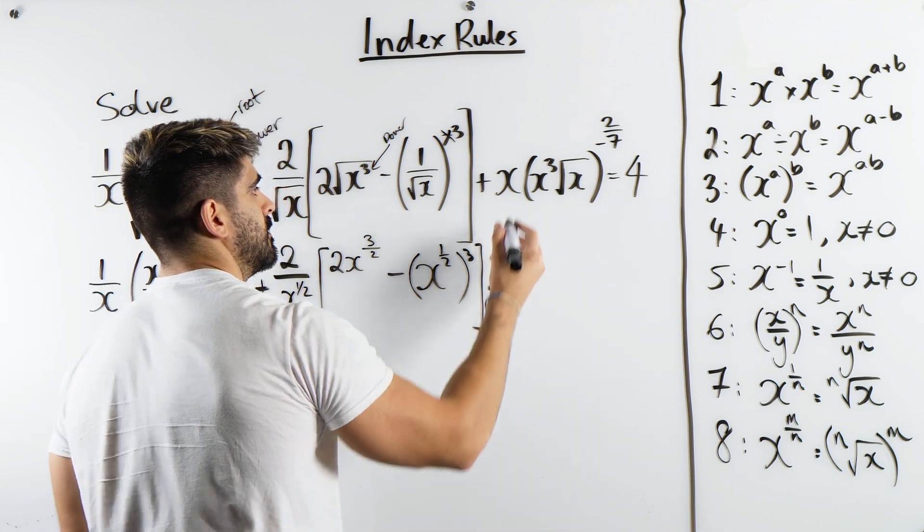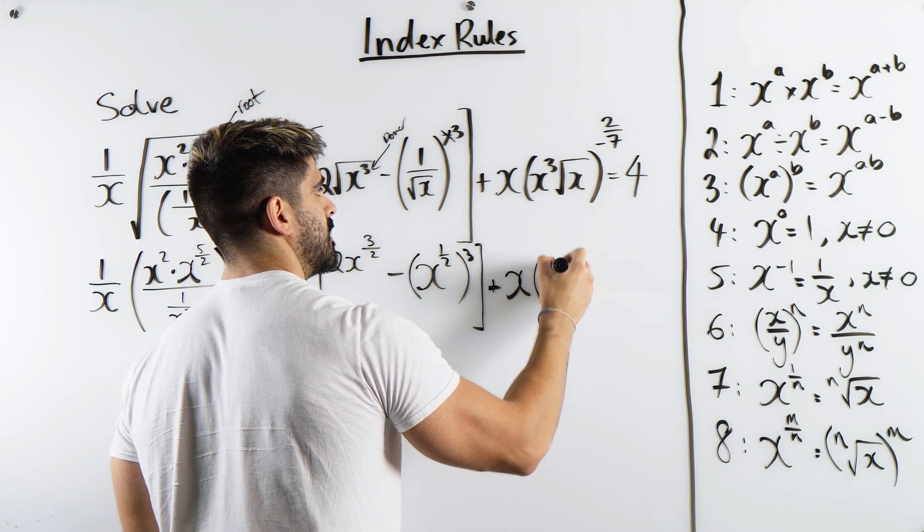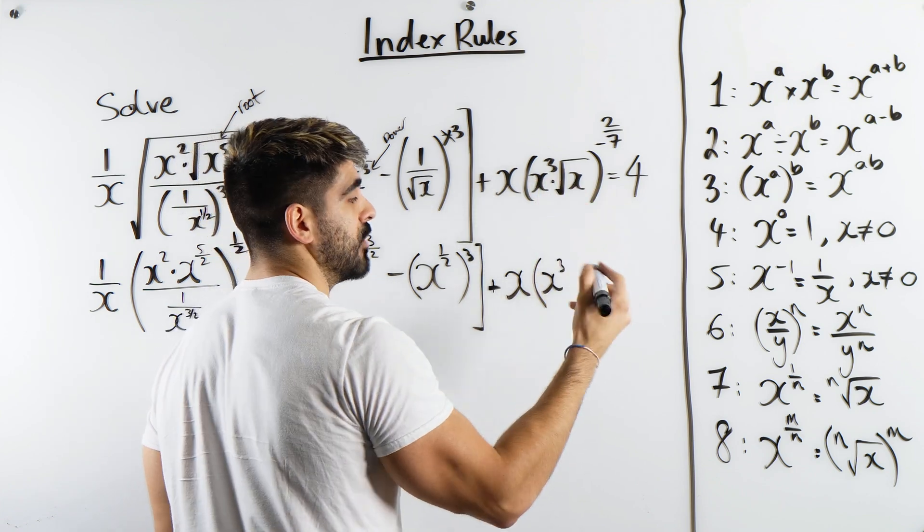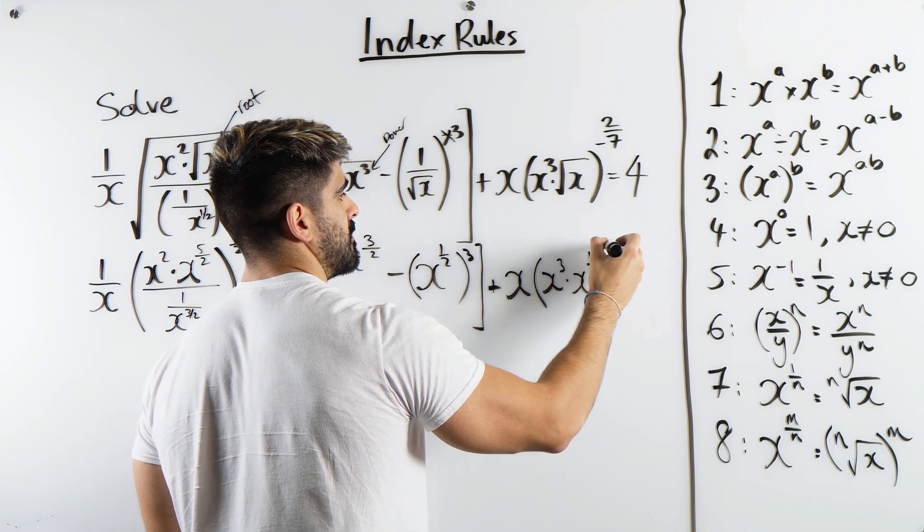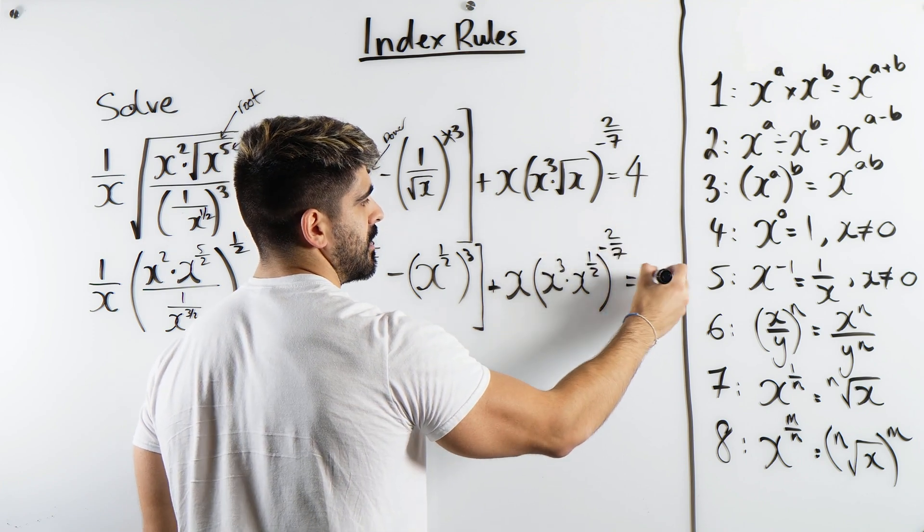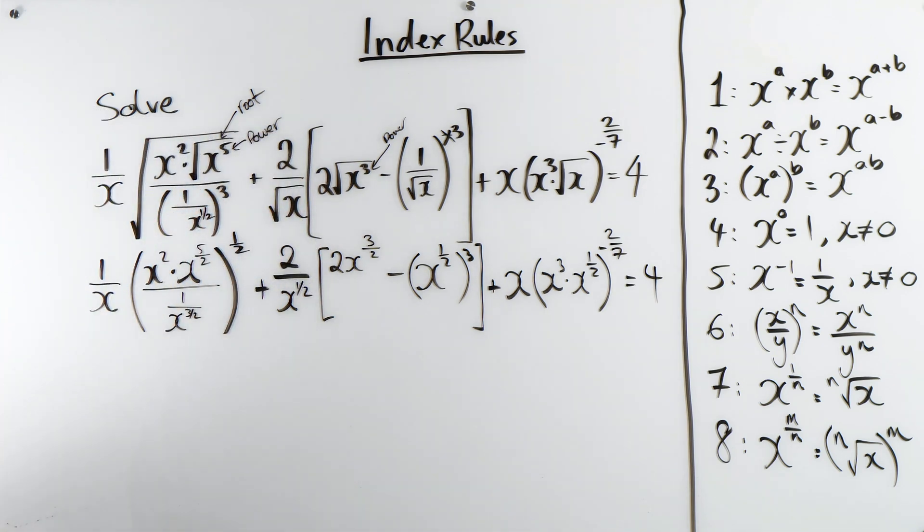Plus here we have x cubed times root x, which is x to the power of a half, to the minus 2 sevenths. Seems random, right? But for sure there's a reason why it's that number.